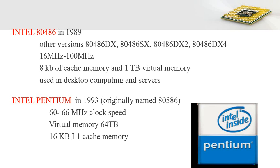In 1993, the 80586 was introduced and was named the Intel Pentium processor, with a clock speed of 60 to 66 MHz. It could address a virtual memory size of 64 TB and came with a Level 1 cache memory of 16 KB.